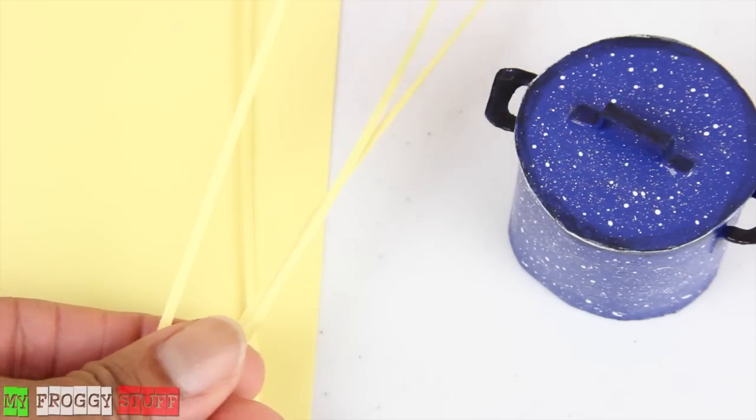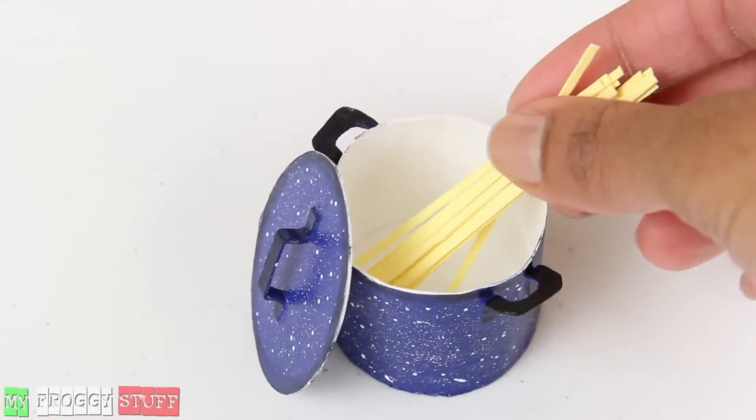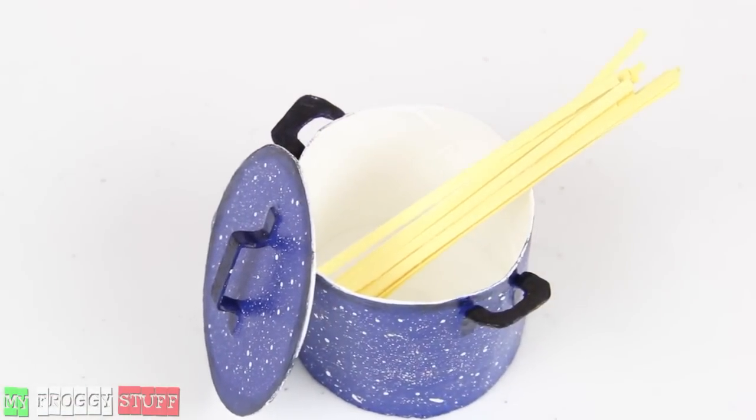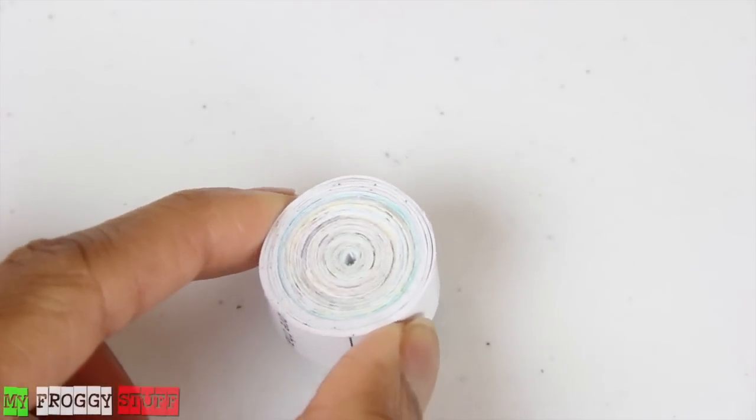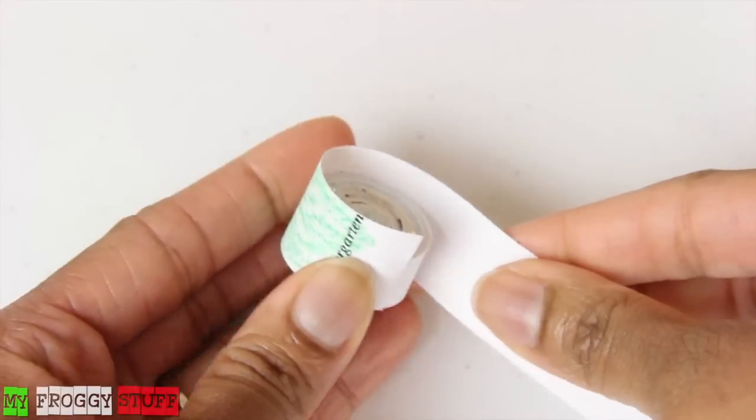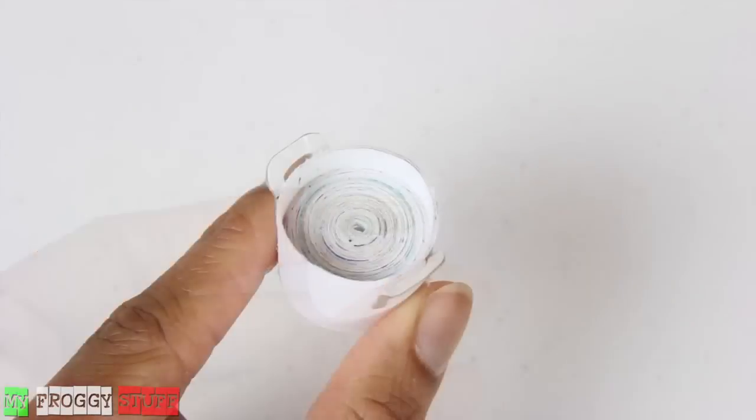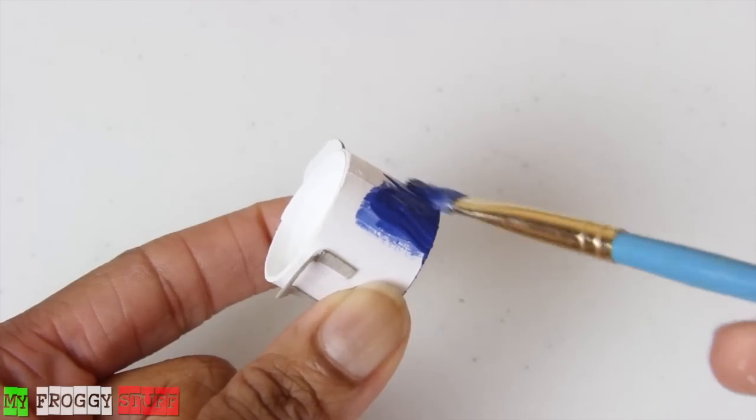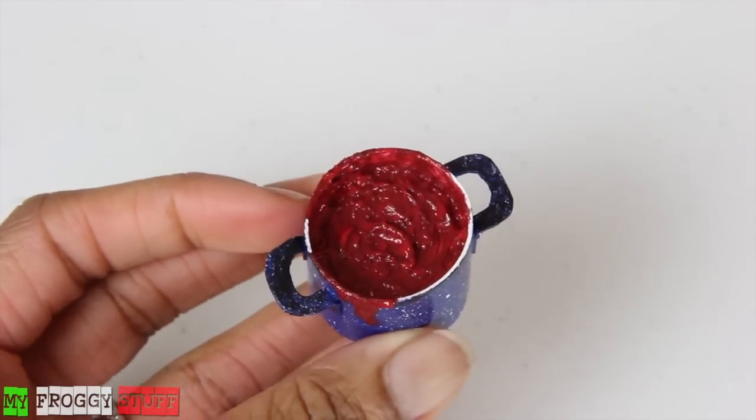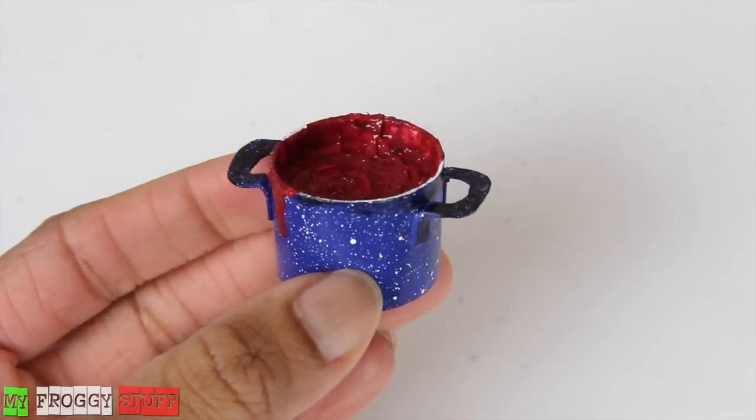Cut thin strips of yellow cardstock and place them in the pot to look like uncooked pasta. Another idea for a pot is to make a wide paper roll, wrap it with more paper that's a little higher to create a recess, add handles and paint, then paint the top with extra pasta sauce to look like the sauce has been cooking.